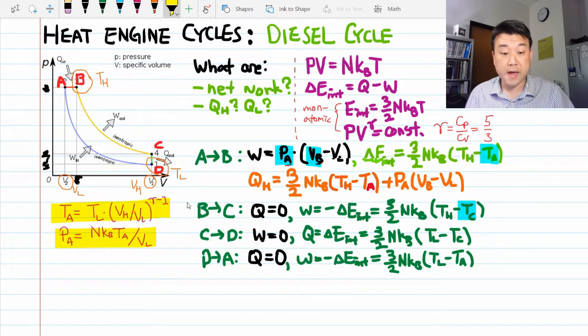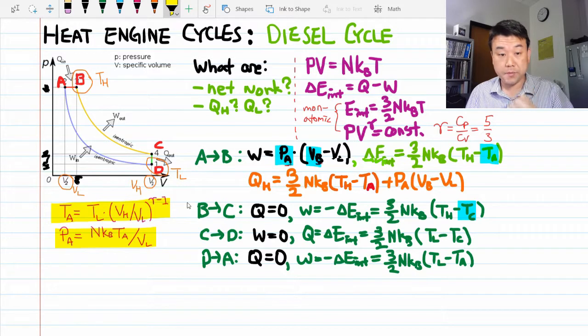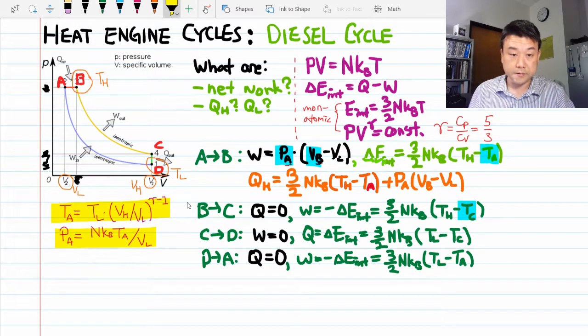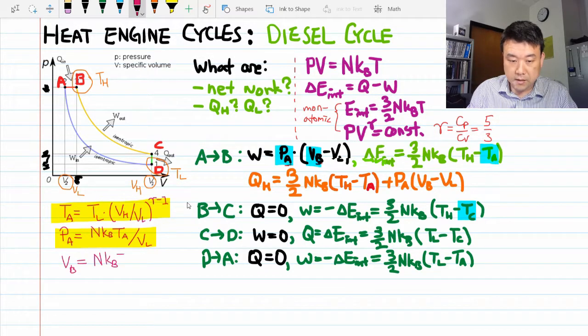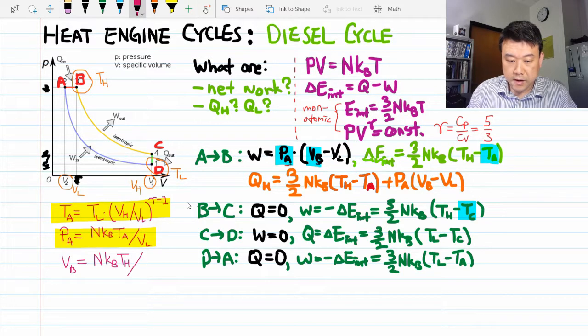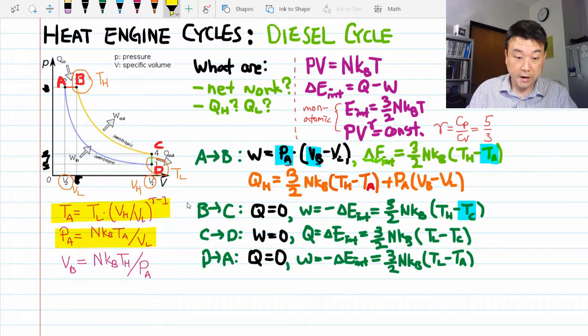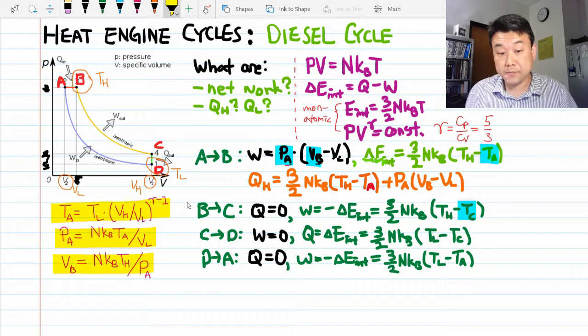Alright. So now I'm going to treat this as another known quantity. If I know pressure at A, then I know pressure at B where I know the temperature. That means I can express the volume there. So the volume at B is, using the ideal gas law again, Nk T_H divided by the pressure at A, which is also pressure at B.